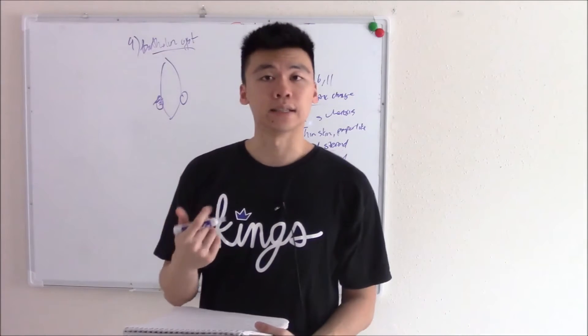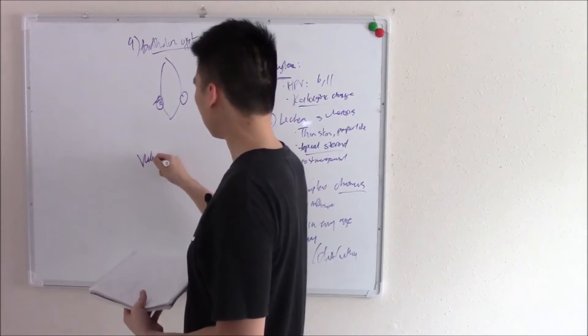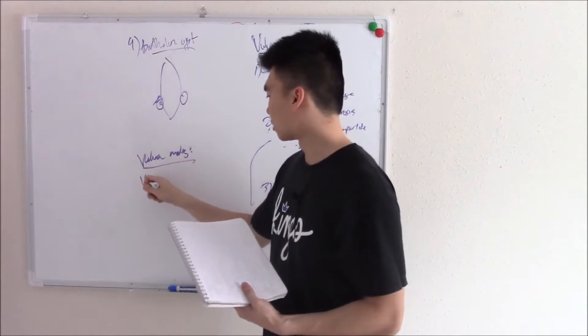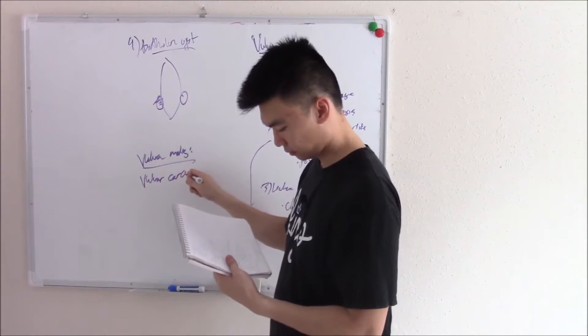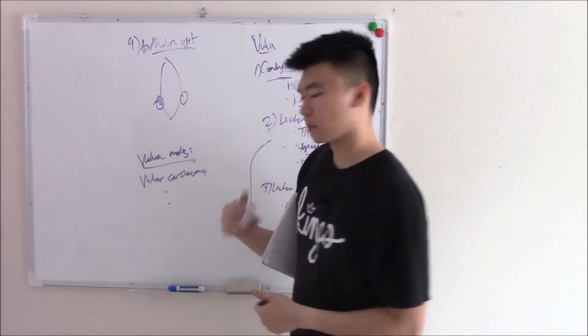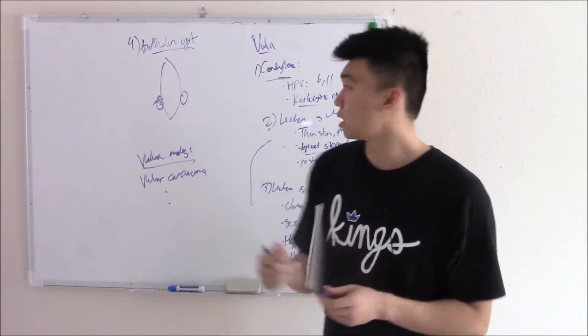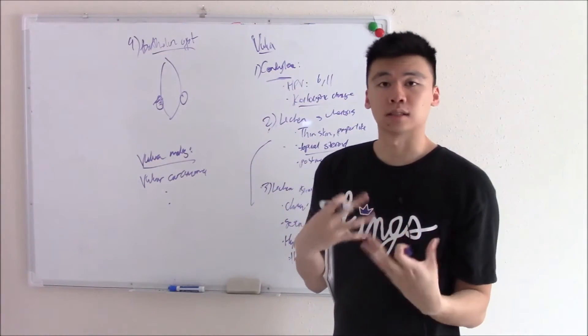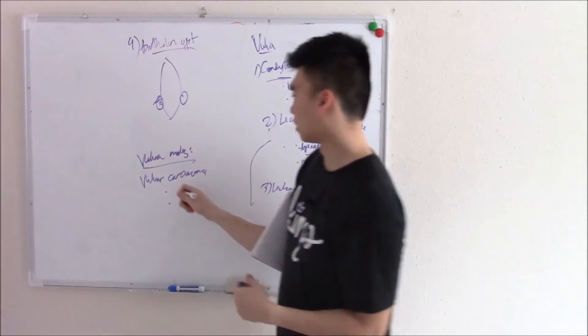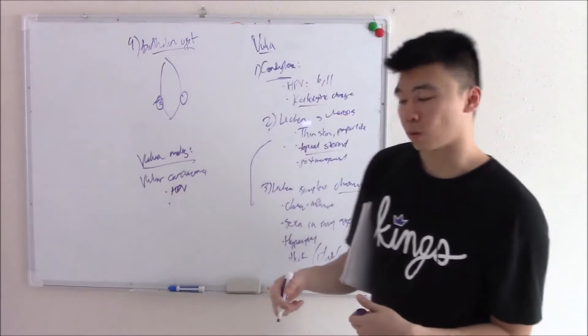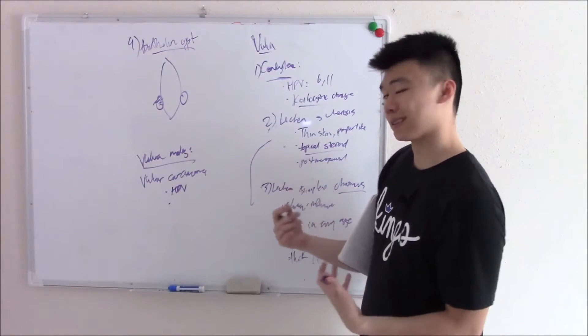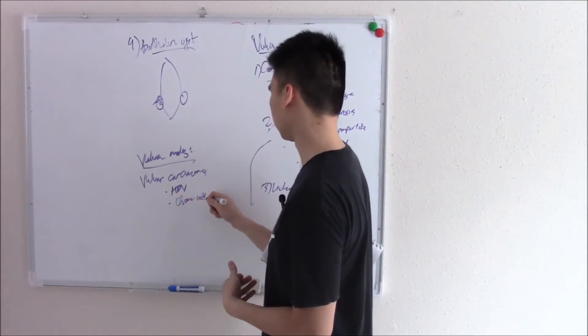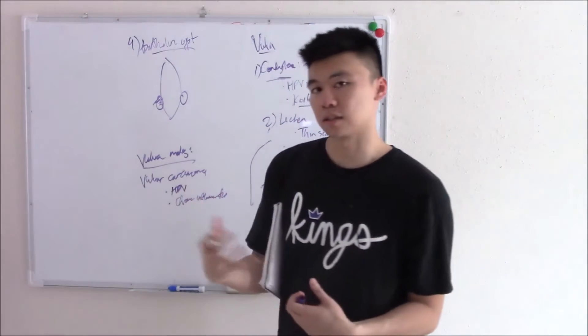Now let's move on to malignancy of the vulva - vulvar carcinoma. We talked about two things that can cause cancer. The first one: high risk HPV strains, because it causes the cell cycle to rev up, causes cells to grow more and they can mutate more. So they can be from HPV, which is the most common. Or we also talked about things like lichen sclerosus, lichen simplex chronicus, chronic inflammation.